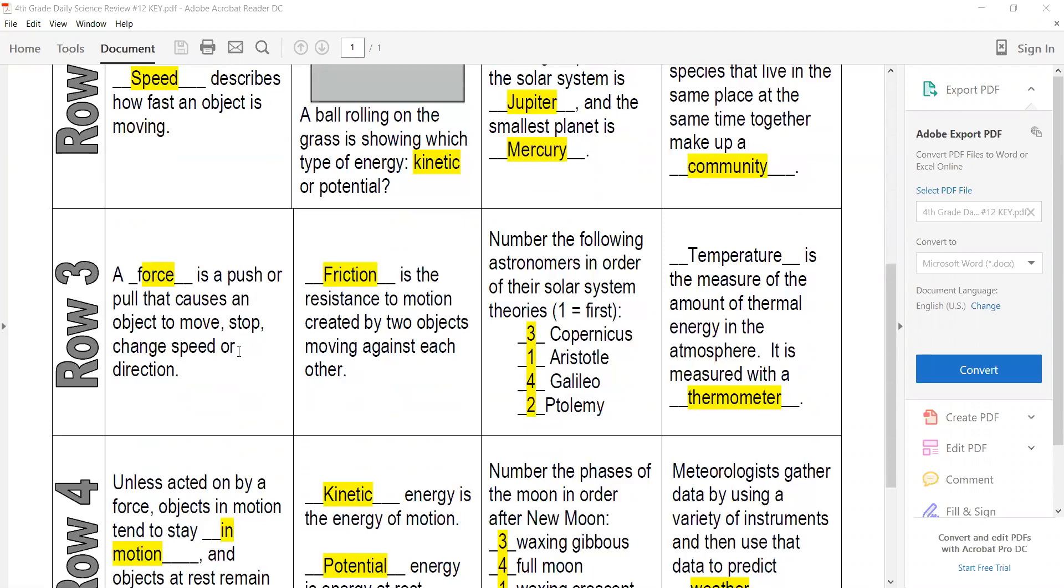A force is a push or pull that causes an object to move, stop, or change speed. Friction is the resistance to motion created by two objects moving against each other. So like if you were to rub your hands, right, you can feel that heat. That's the friction because you're rubbing your two hands together.